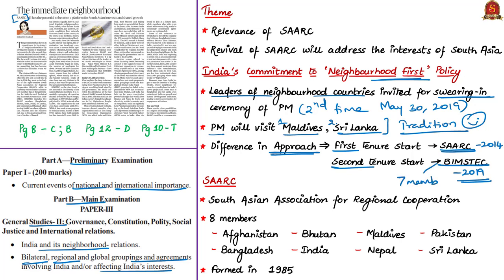BIMSTEC stands for Bay of Bengal Initiative for Multisectoral Technical and Economic Cooperation. SAARC has 8 members: Afghanistan, Bangladesh, Bhutan, India, Maldives, Nepal, Pakistan and Sri Lanka. SAARC was formed in the year 1985 and Afghanistan joined in the year 2007.